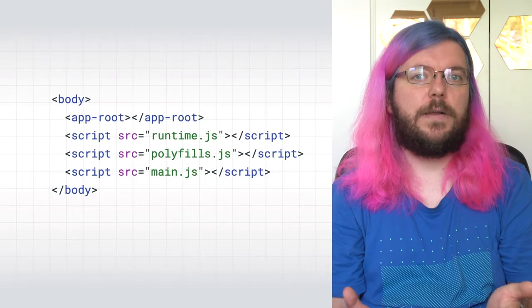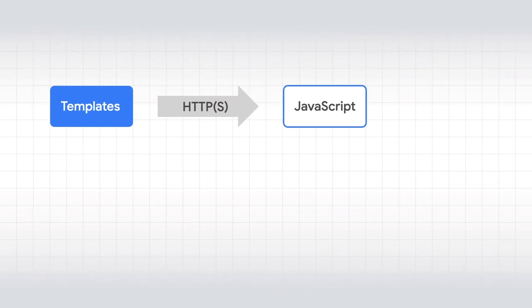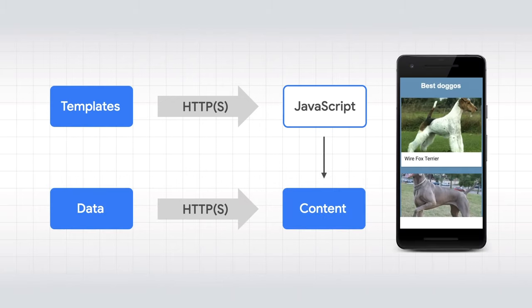Before we dive in, let's recap what a single-page application actually is. Unlike a regular website, a single-page app uses JavaScript to control the page's lifecycle. JavaScript is typically used to create the HTML that creates the page. It also uses JavaScript to load other content when users are navigating to other parts of the single-page application. These are often called views rather than pages.